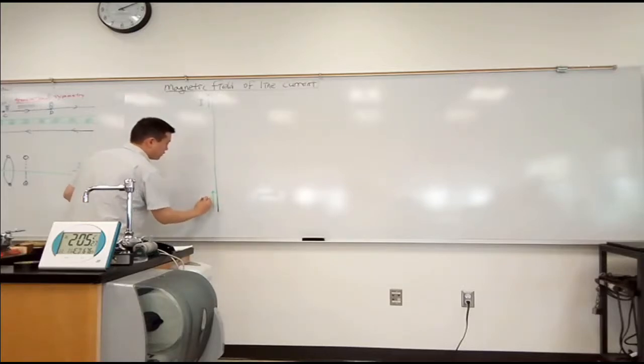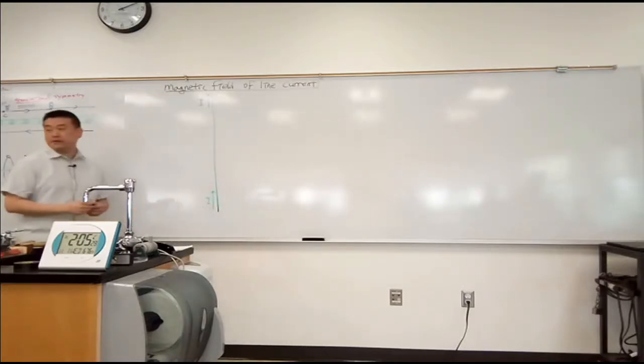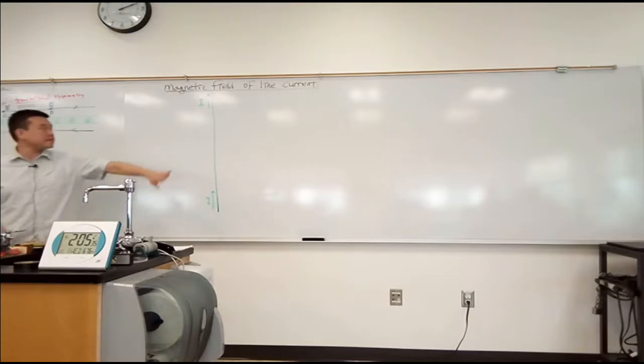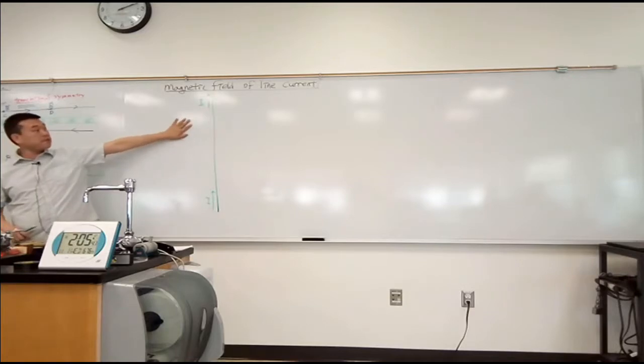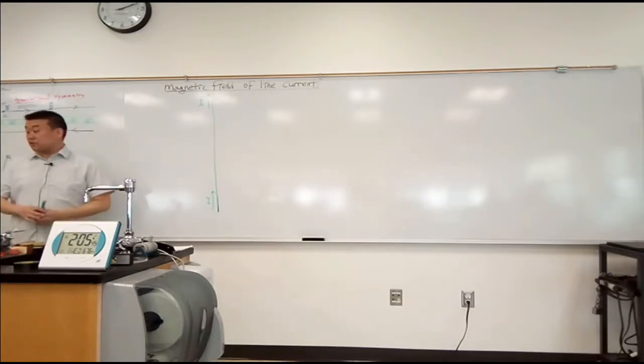All right, so this is the line current. I drew it vertically this time because that's easier. All right, so let's say we have a line current and we want to find the magnetic field due to this line current. We have done this using Biot-Savart's law before, so we at least know the result.